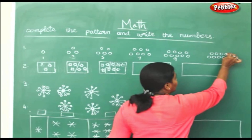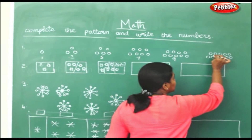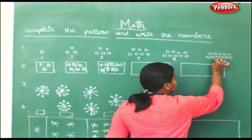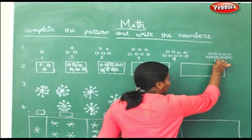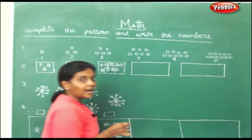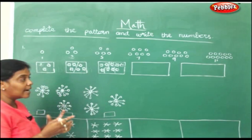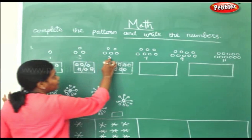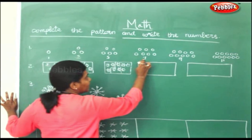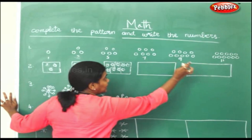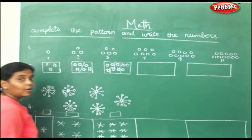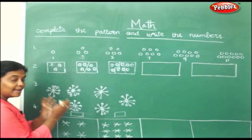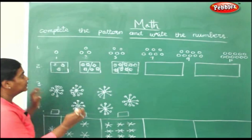Counting to 11: 1, 2, 3, 4, 5, 6, 7, 8, 9, 10, 11. So patterns are repeated numbers. See here: 1, 3, 5, 7, 9, 11. What are they all? They are all numbers in the same pattern — odd numbers.